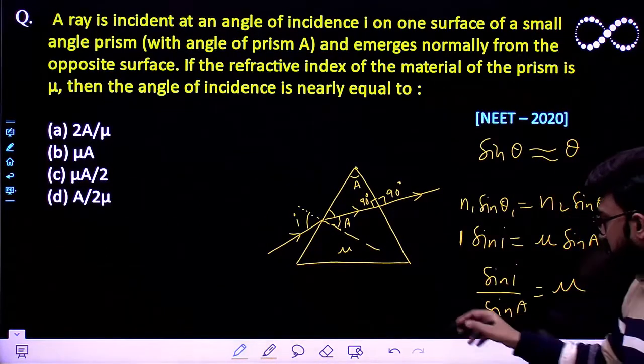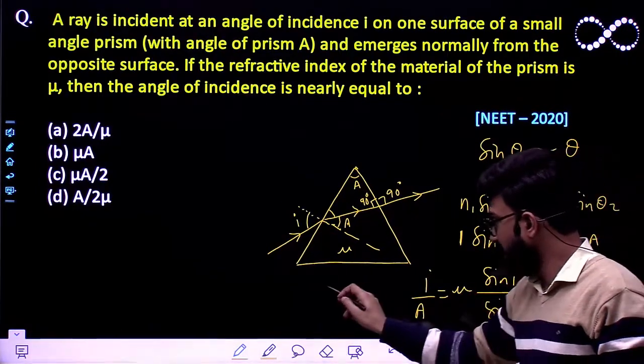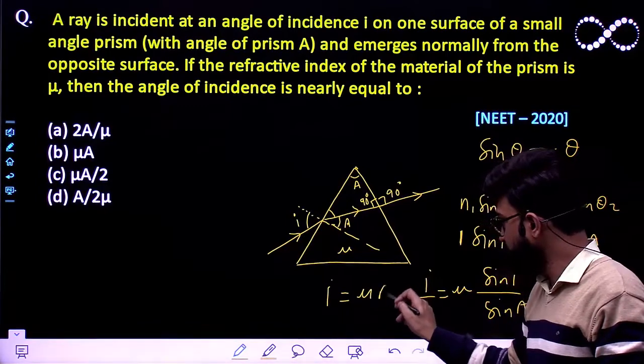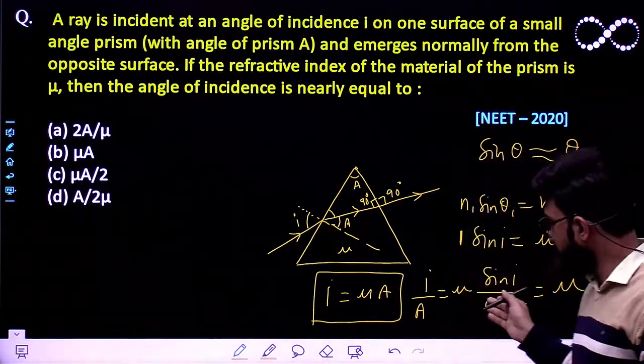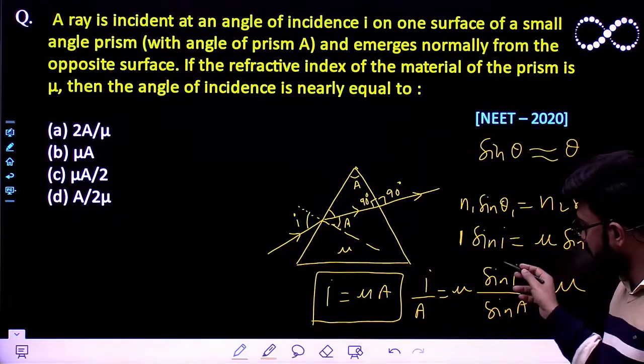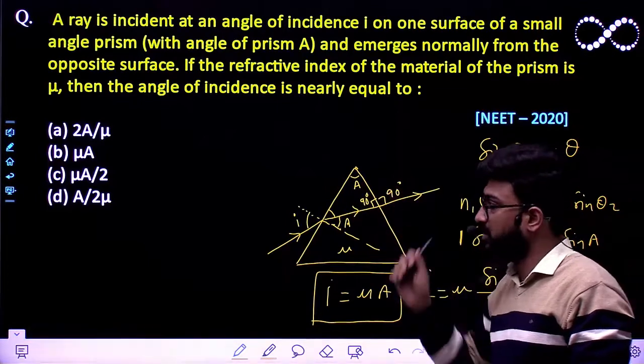So these two terms become i by A which equals mu, so i comes out to be mu times A. This is the final expression. This can only be right when the angle of the prism is very small. So the answer we are getting is B.